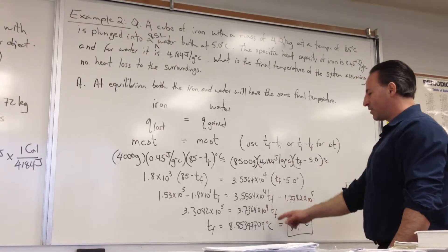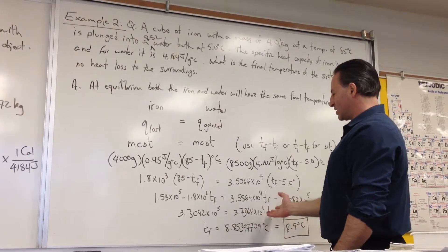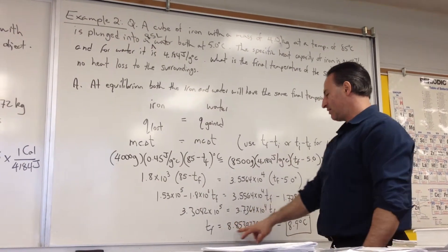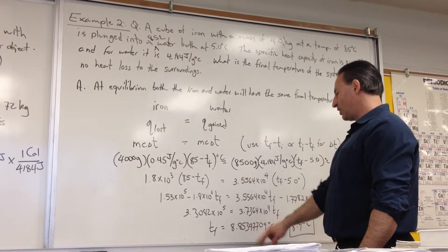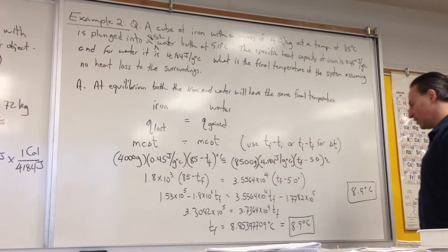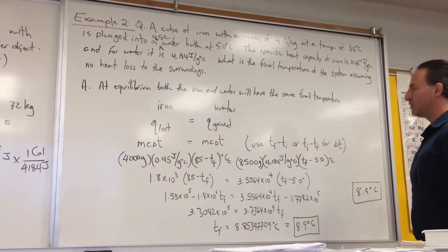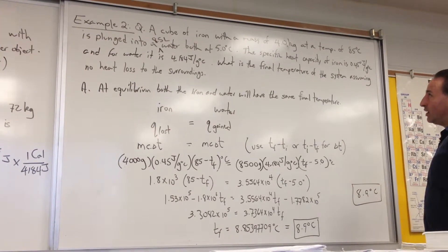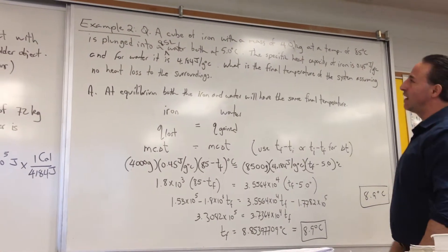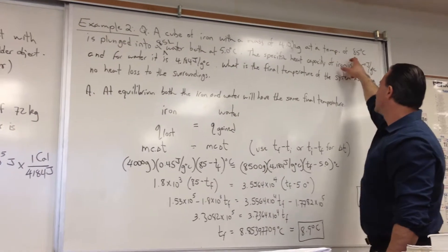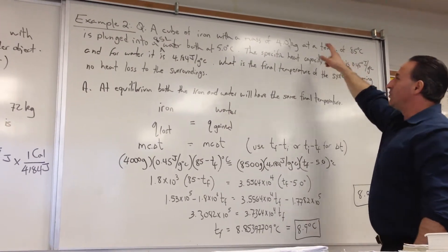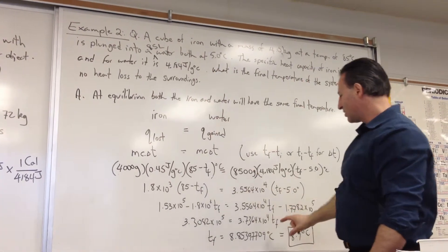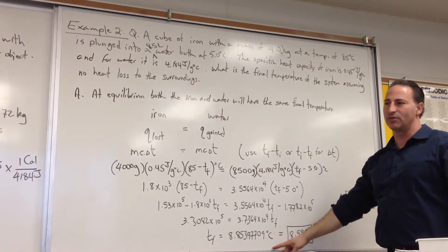Then we just do the algebra, and we get, we transpose all the Tf to one side and all the numbers to the other, and Tf ends up equaling 8.85 degrees Celsius. We're only allowed two significant figures, so the final answer has to be 8.9 degrees Celsius. Which is surprising, because we have this block at 85 degrees Celsius, and the water is at 5 degrees Celsius. Why does the final temperature only end up being 3 degrees warmer than the initial temperature of the water?